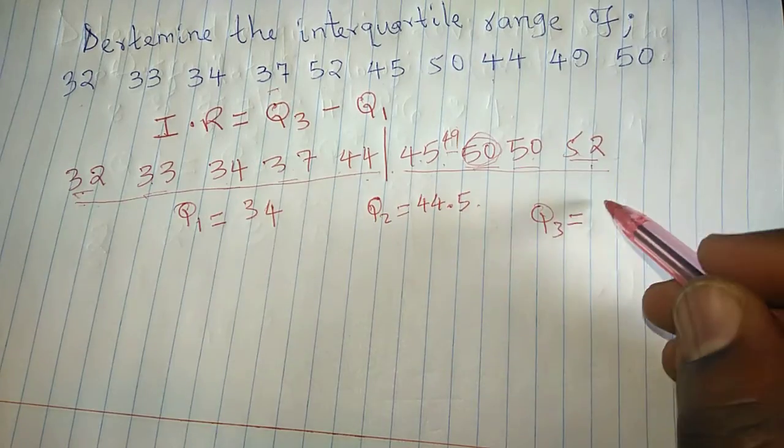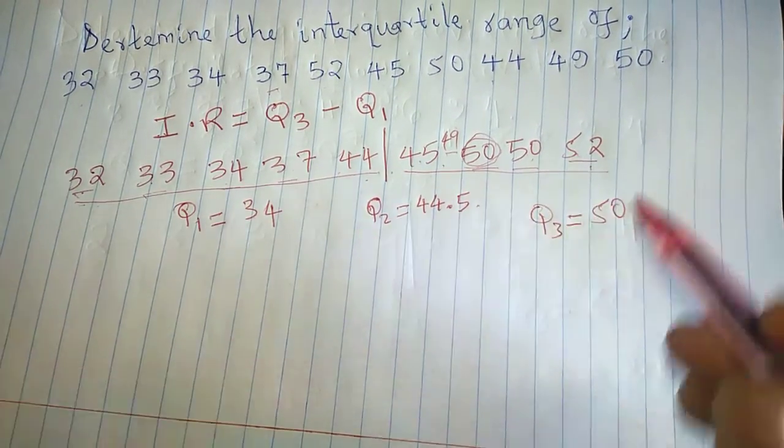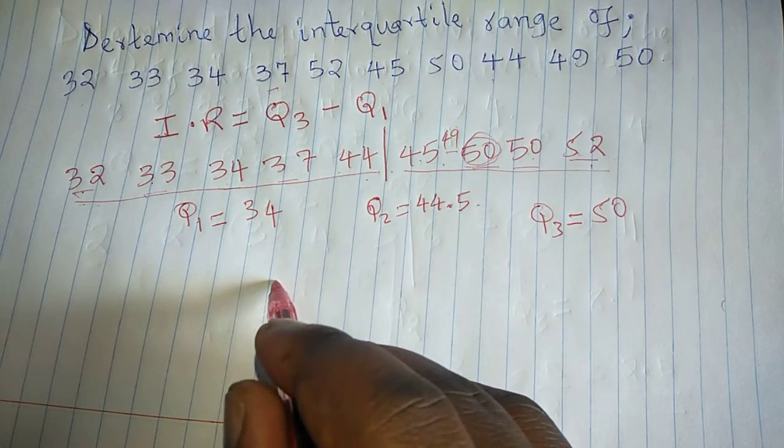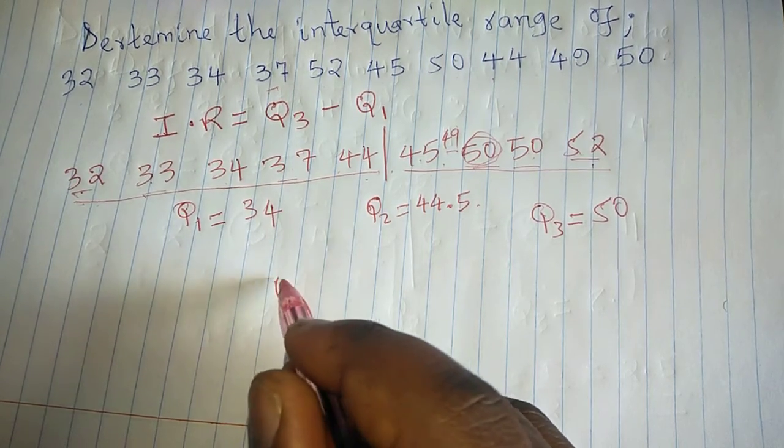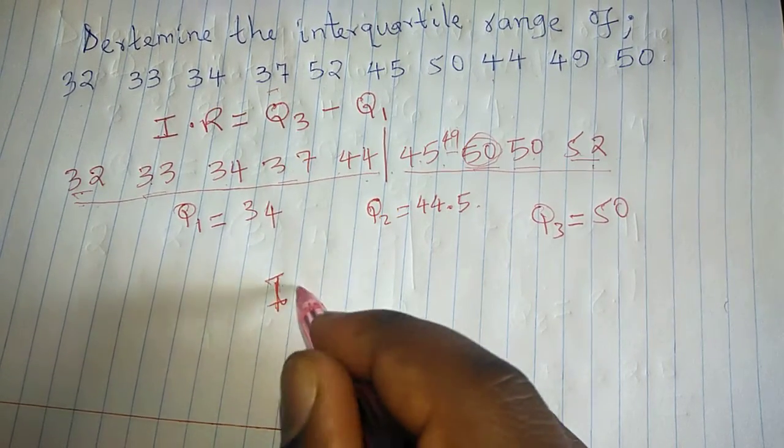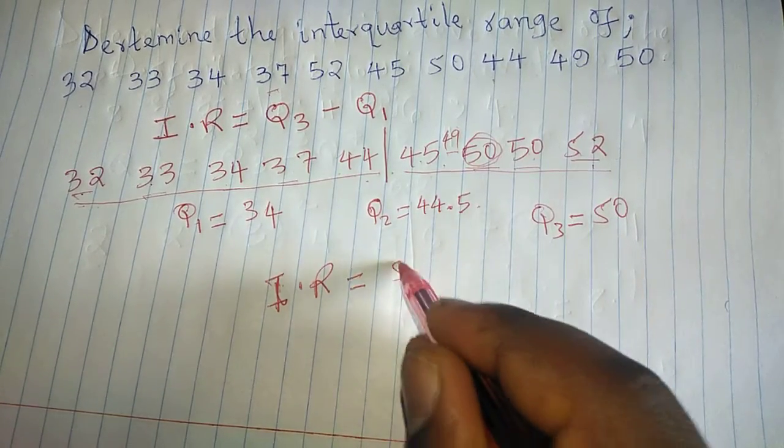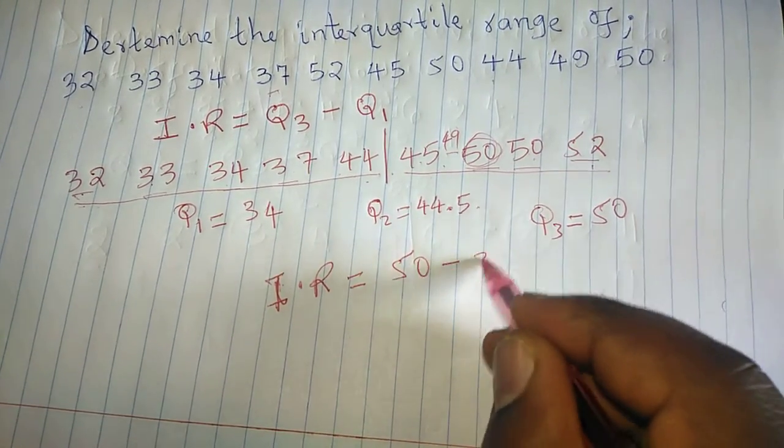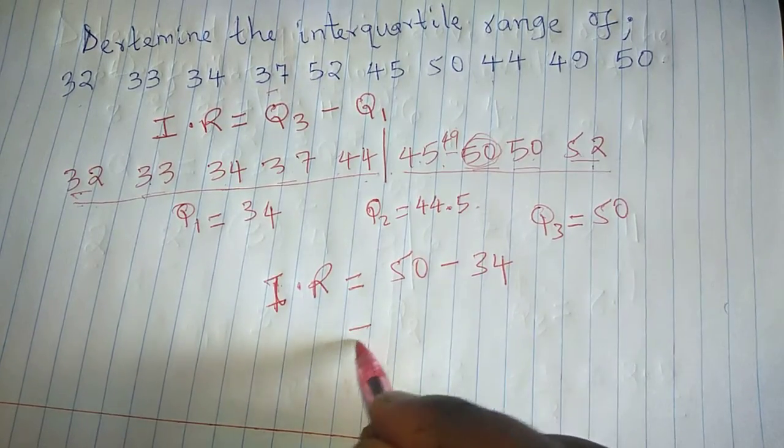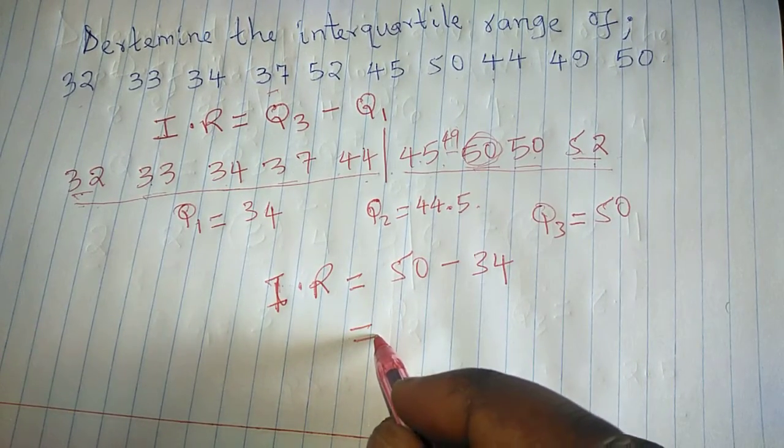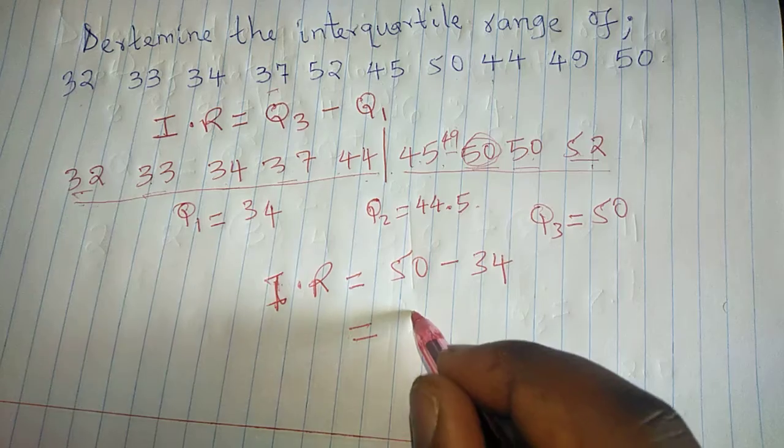So the difference between Q3, for us to get the interquartile range, when we take Q3, 50 minus Q1, 34, this will give us the interquartile range. So the interquartile range will be 16.